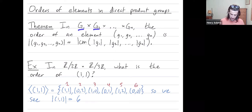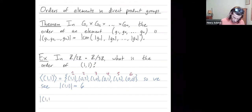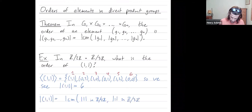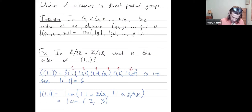...gn in their individual groups. So here we could have used the theorem to compute that the order of (1,1) is equal to the least common multiple of the order of 1 in Z2 and the order of 1 in Z mod 3Z, because those are the component groups in this direct product. The order of 1 in Z2 is two — one plus one is two, which is zero in Z2. The order of 1 in Z3 is three — one plus one plus one is three, which is zero in Z3. And then the least common multiple of two and three is six. So this theorem is agreeing with our computations, and the theorem is true in general.